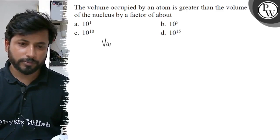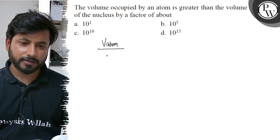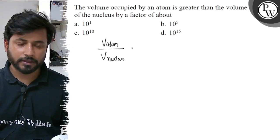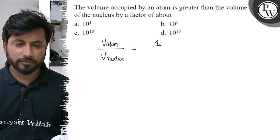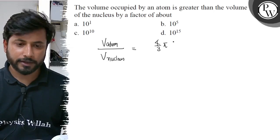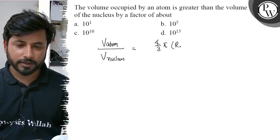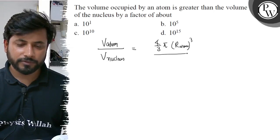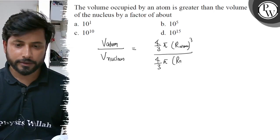So, volume occupied by atom divided by volume occupied by nucleus. The atom's volume will be 4 by 3 pi times radius of atom cubed, divided by 4 by 3 pi times radius of nucleus cubed.